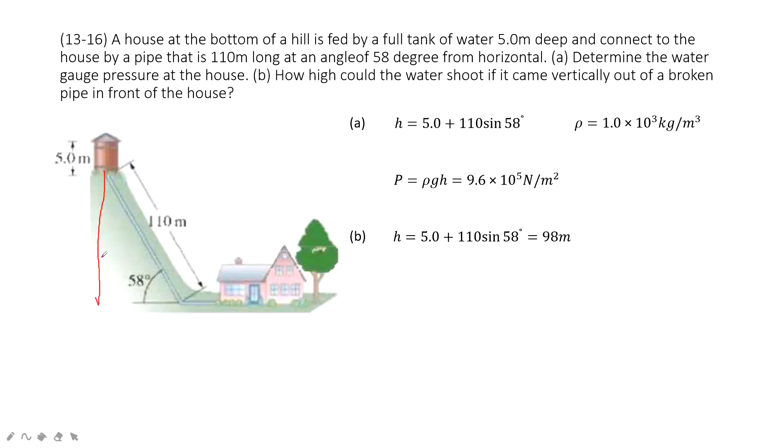So h is a vertical distance. In this triangle, this is 110 meters. This angle is there. So this side is 110 times sine 55 degrees.